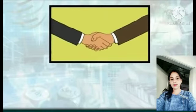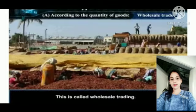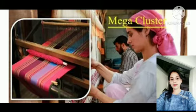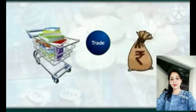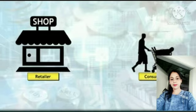Hello students, today's lesson for geography is trade. What is the meaning of trade? Buying and selling of goods and services to fulfill each other's need is trade. Buying and selling of goods is called visible trade.